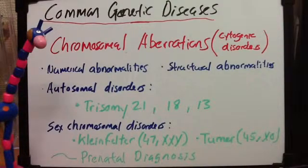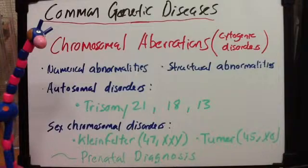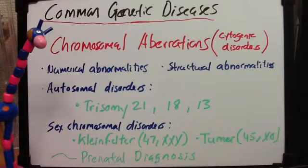Now let's talk about structural abnormalities. There could be a breakage followed by loss or rearrangement, such as a deletion or translocation. The five types of chromosomal mutations are: deletion, duplication, inversion, translocation, and non-disjunction. For example, deletion is associated with Cri-du-chat syndrome, and translocation with Burkitt's lymphoma, which is a cancer. Generally, there is a loss of chromosomal material in these cases.